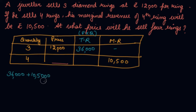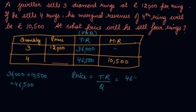That gives you 46,500 as your total revenue for 4 units. Now you can divide total revenue by quantity to get price — total revenue divided by quantity gives your price.